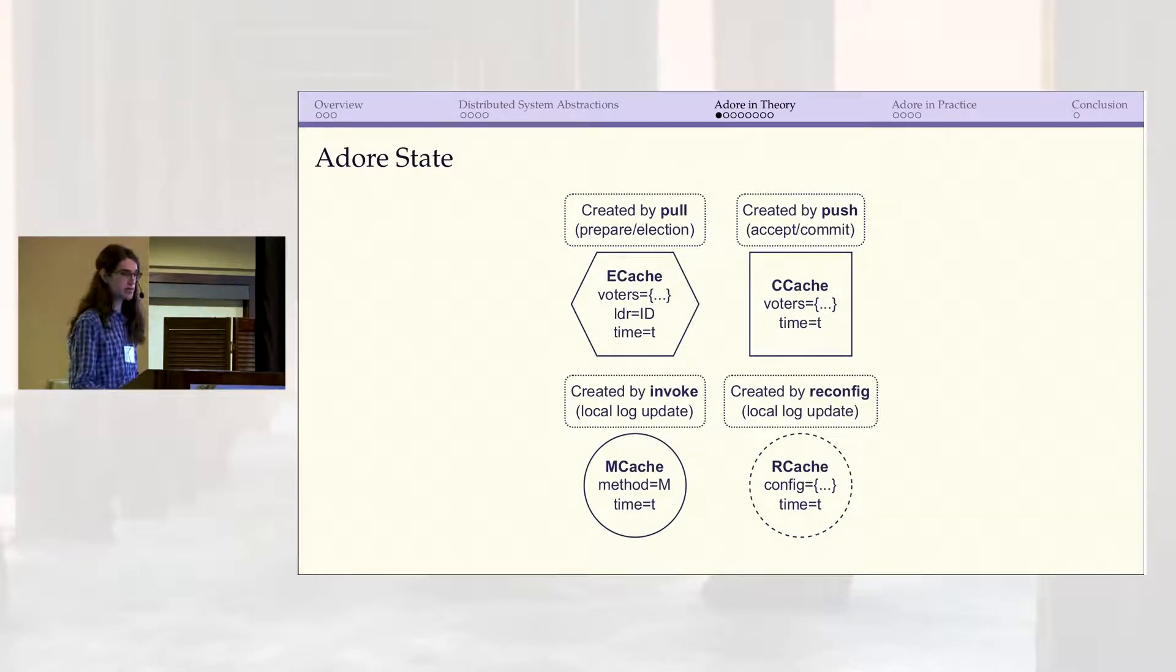Next we'll see how Adore finds a middle ground by keeping this atomic object idea but reintroducing some lower-level details. Like the ADO model, Adore models the system as a cache tree, but where the ADO cache tree only keeps track of methods and whether or not they're committed, Adore adds some additional metadata. There are four types of caches: E caches, C caches, M caches, and R caches, and each one is created by a particular operation. M caches represent potentially uncommitted methods and are created by the invoke operation, which corresponds roughly to a local log update in Paxos or Raft. E caches and C caches are sort of logical markers that represent how in agreement the servers are at various points. E caches are created by the pull operation, which corresponds to a prepare or election phase, and C caches are created by push, which is like the accept or commit phase. R caches are very similar to M caches but are used for reconfiguration, and we'll come back to them in a couple slides.